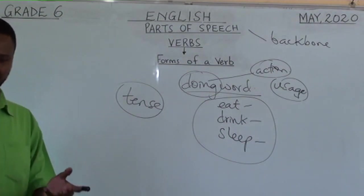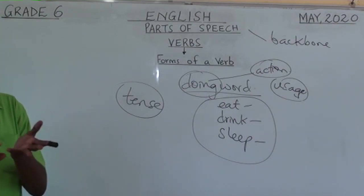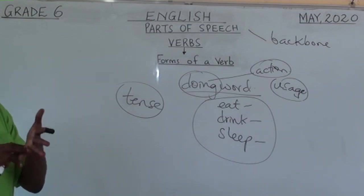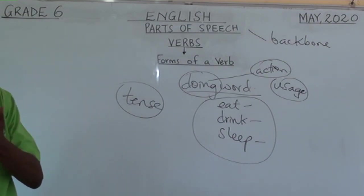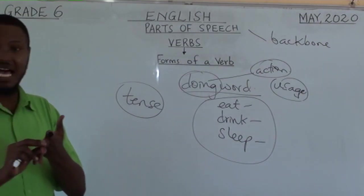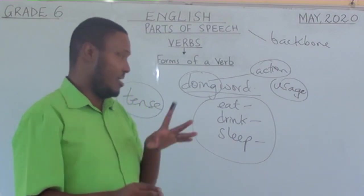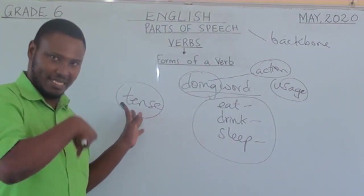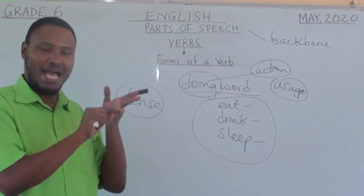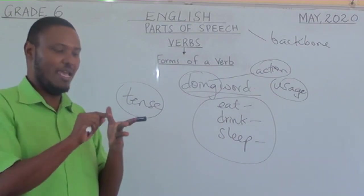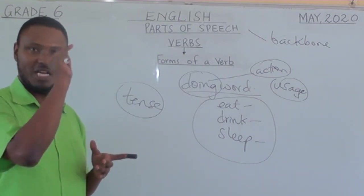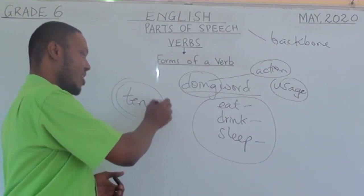We have — and I believe by now you know — we have present tense, we have past tense, and we have future tense. Present tense means present time. Past tense means past time. And future tense means future time. These are the tenses that we're talking about.